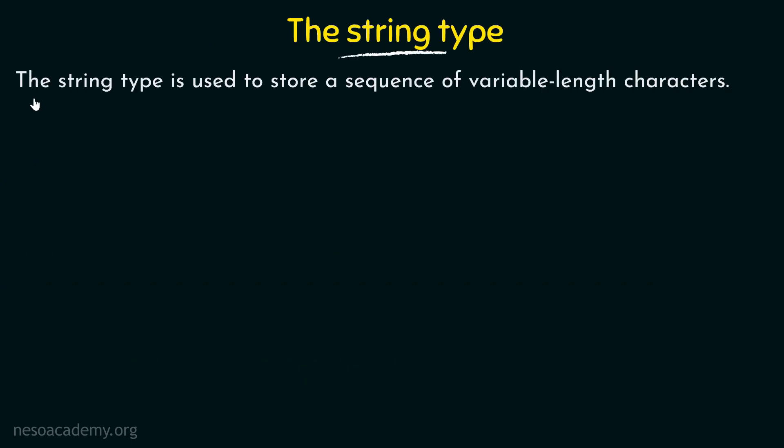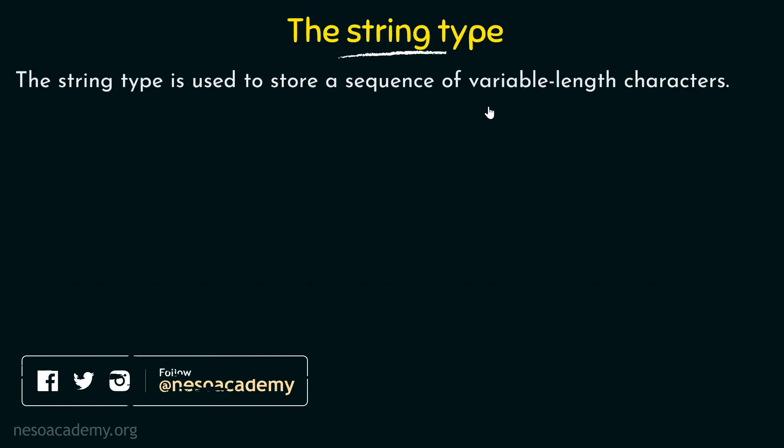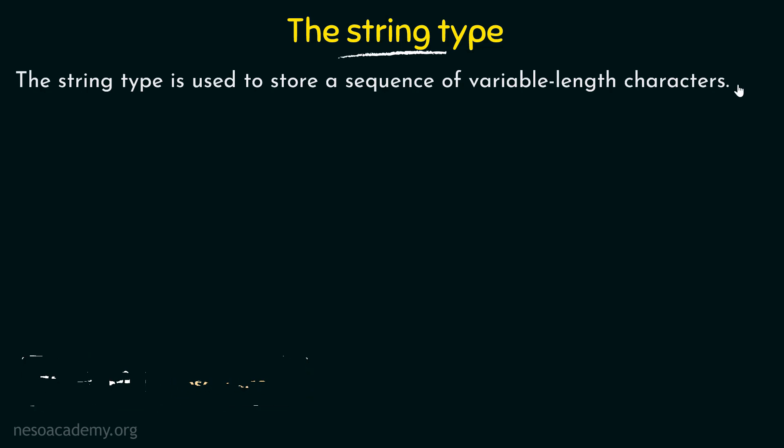The String type is used to store a sequence of variable length characters. We have already seen another data type that can store characters — the character data type, represented by char — but that can hold just one character at a time. There may be times when we want to store a word or a sentence, and in those cases we will be making use of the String type, which will come in really handy.